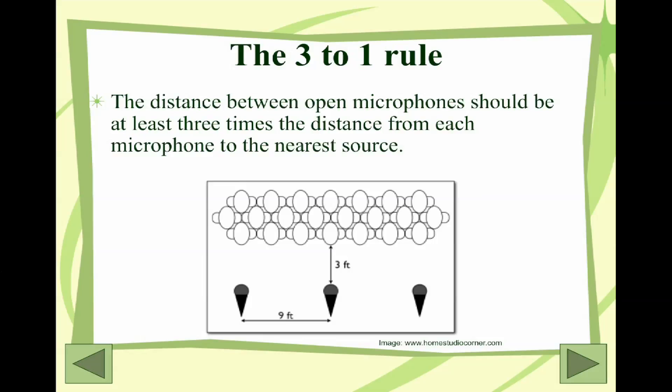One of the final things is the three-to-one rule — the distance between open microphones when using multiple microphones feeding into the same receiver. We want to make sure those microphones are at least three times the distance away from each other as they are to the nearest source. So if a choir is three feet away from the microphones, the microphones should be nine feet away from each other. This reduces the echo you can hear when one microphone picks up sound shortly after another, and helps eliminate various other noise issues. Remember the three-to-one rule if you're ever lucky enough to shoot with multiple microphones.